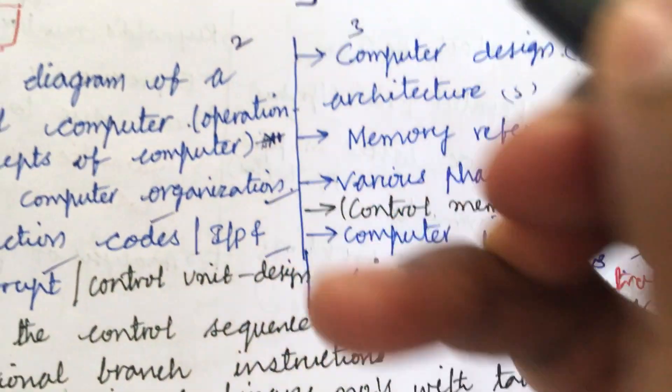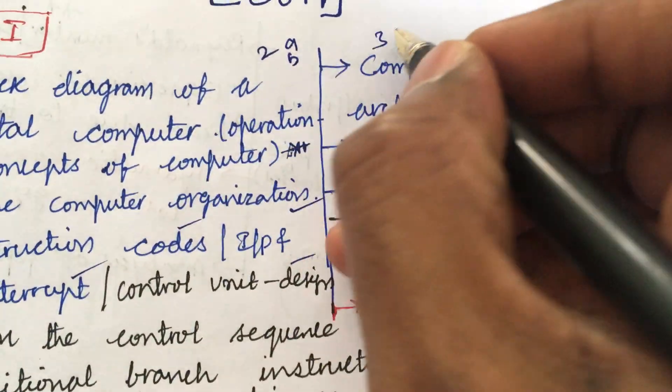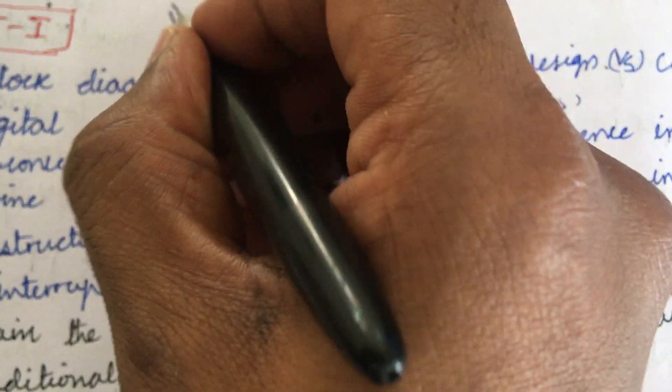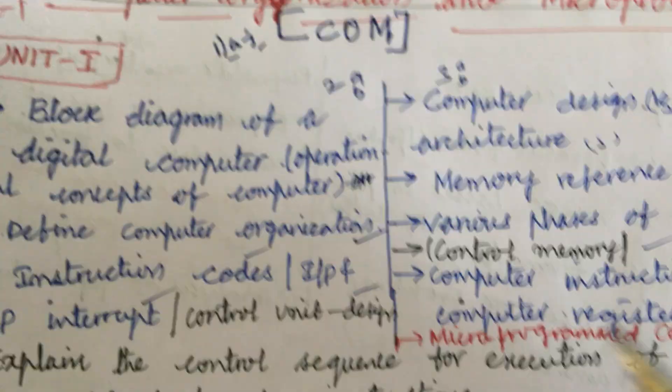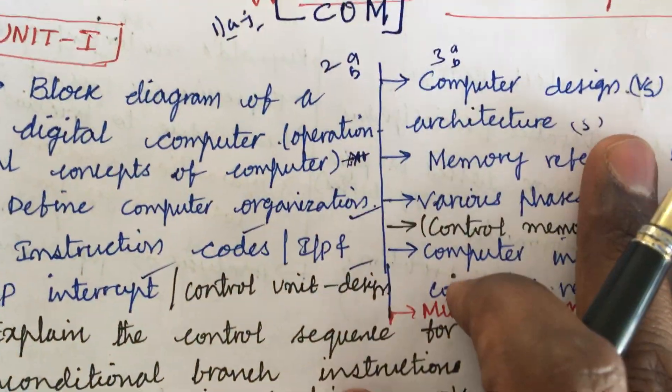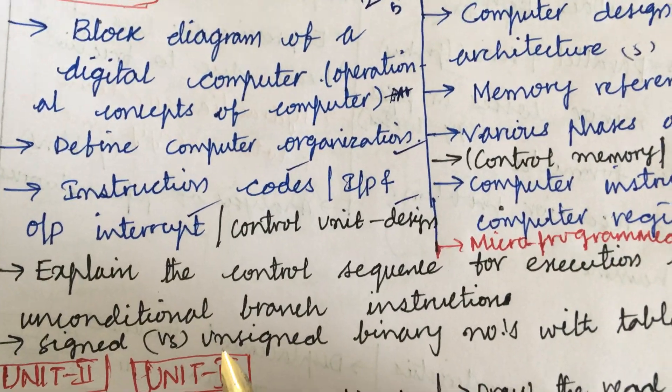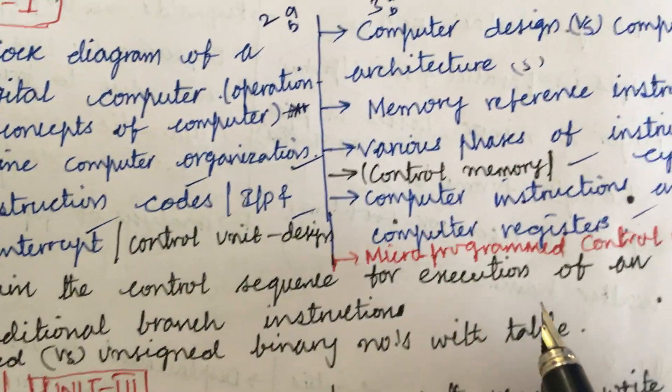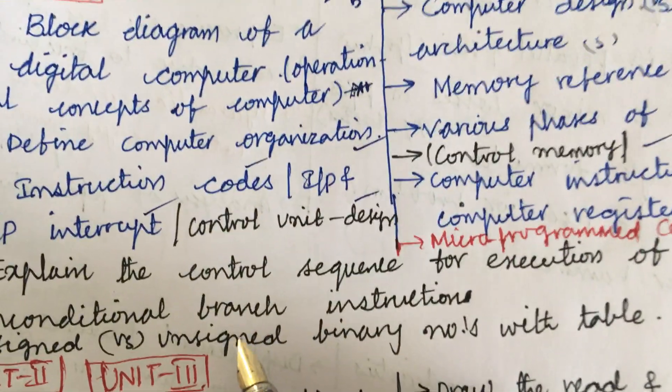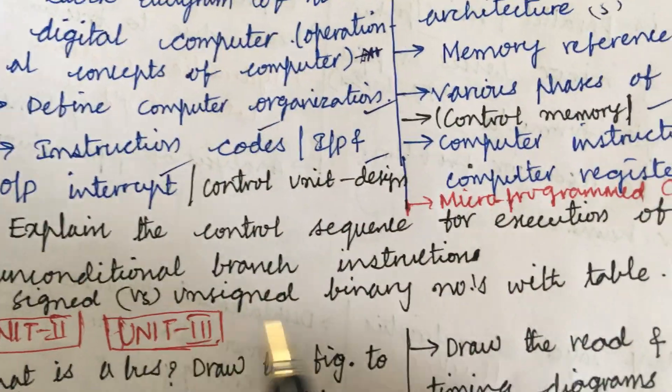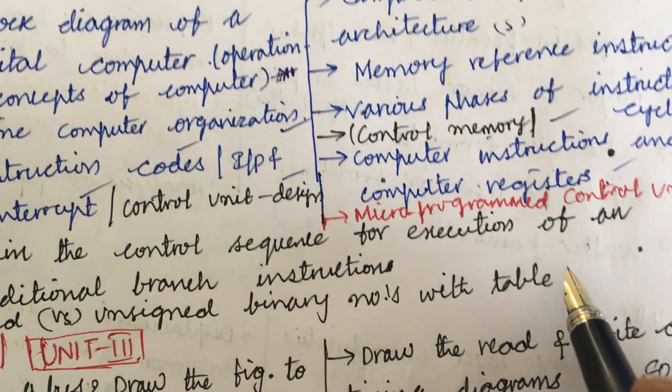This comes under the question 2 and 3 in the question paper with A, B split, whereas 1A to J are the short questions which you need to work out all these concepts to cover even the short questions here students. Later, explain the control sequence for execution of unconditional branch instructions and signed versus unsigned binary numbers with a table.